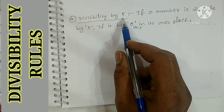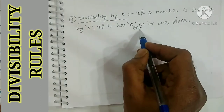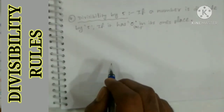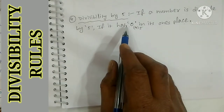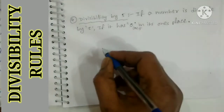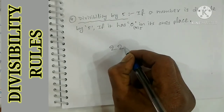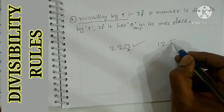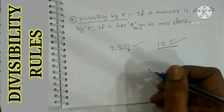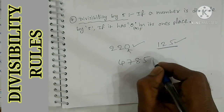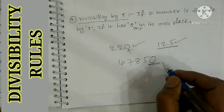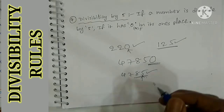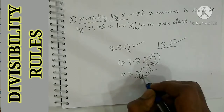Divisible by 5: this is very simple. If a number has 0 or 5 in its units place, it is divisible by 5. Similar to the rule for 2, where units place must be 0, 2, 4, 6, or 8 - for 5, the units place must be 0 or 5. Example: 220 - units place is 0, divisible by 5. Another example: 125 - units place is 5, divisible by 5. Example: 4785 or 47850 - units place 0 or 5, divisible by 5.